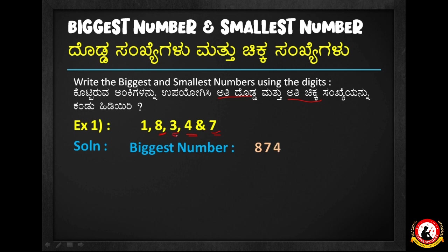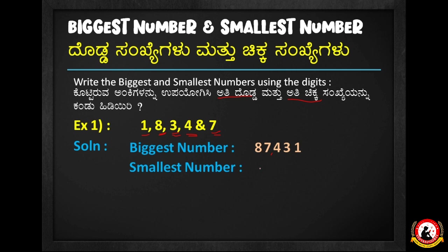Going from smaller to larger digits: 4, then 3, then 1. The answer is 87,431. This is the highest number using those digits.